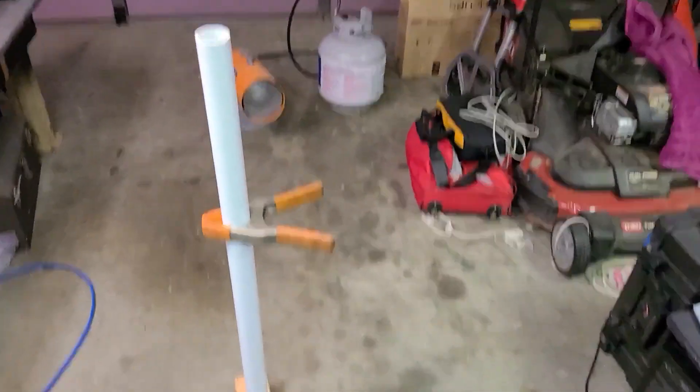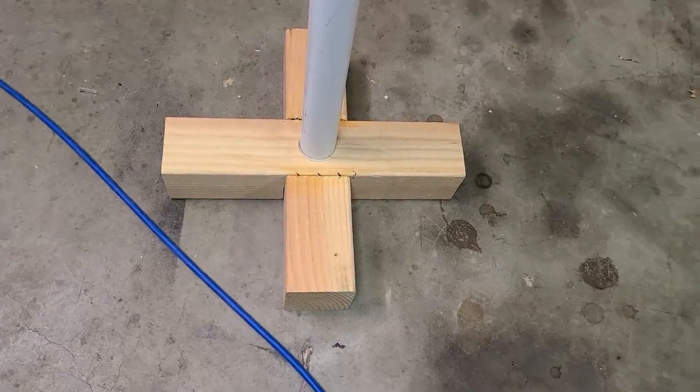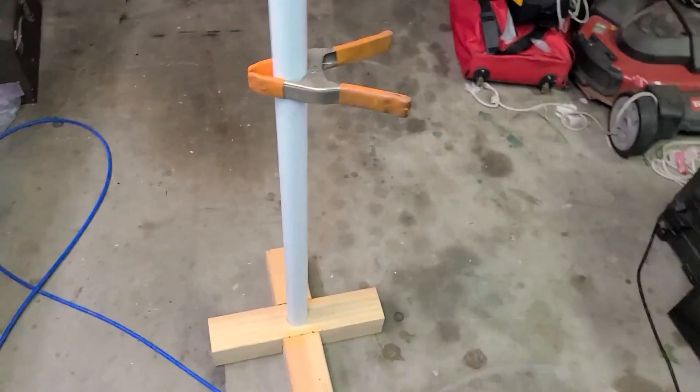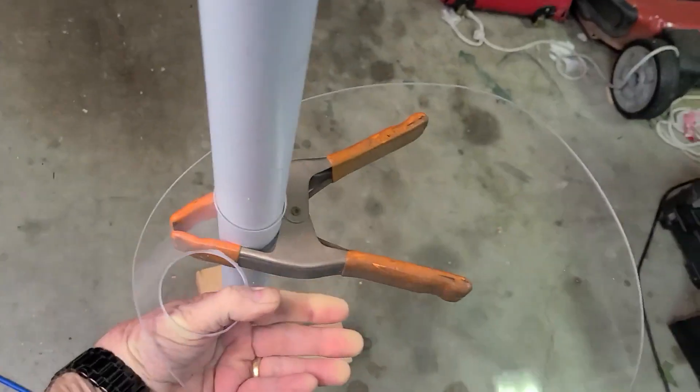And so here's a stand: a couple pieces of 4x4, some glue, a hole in it for some PVC. And add another hole right there, goes over the PVC. But how to hold it in place?